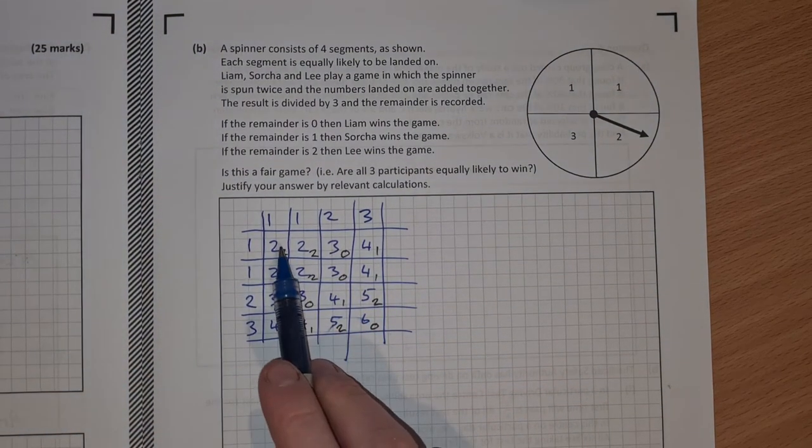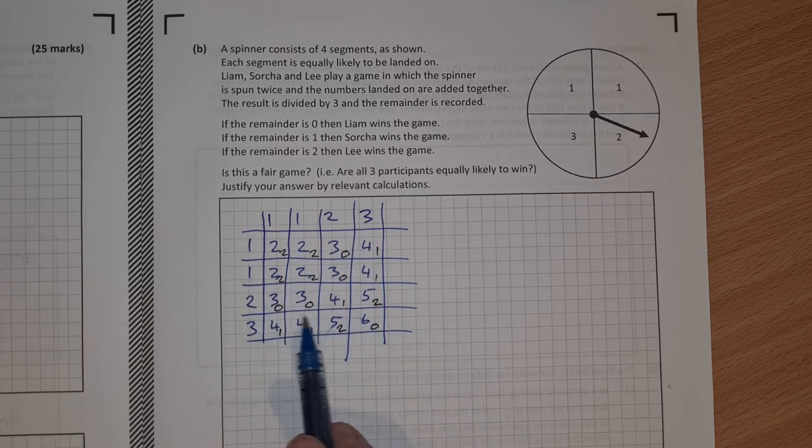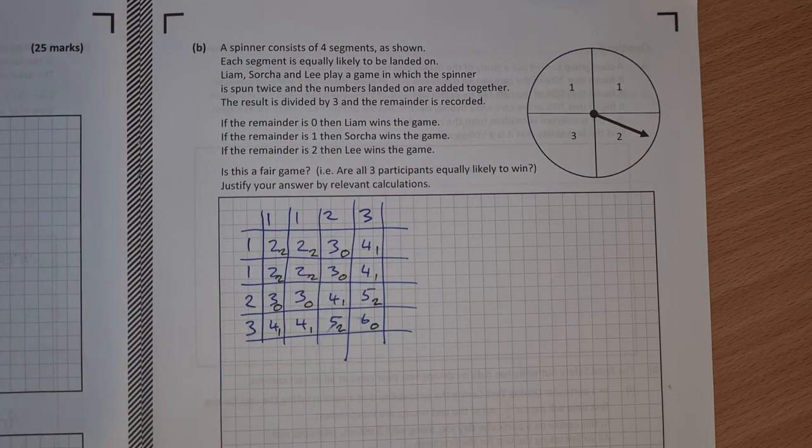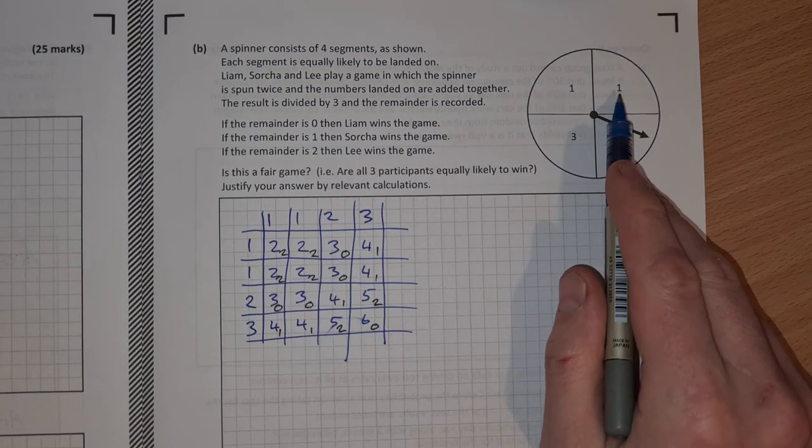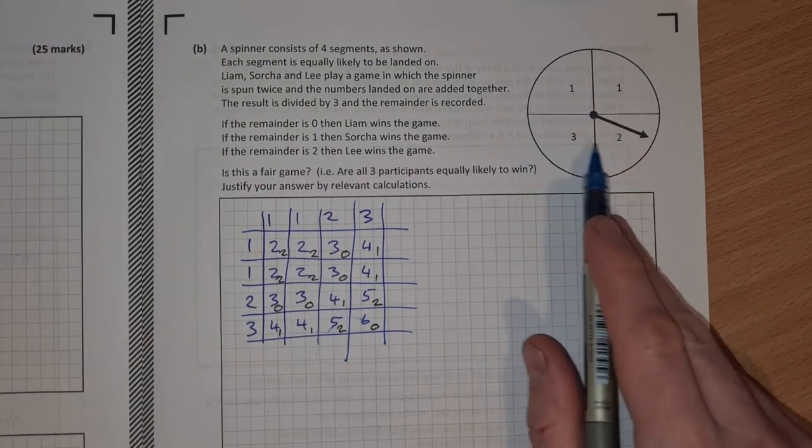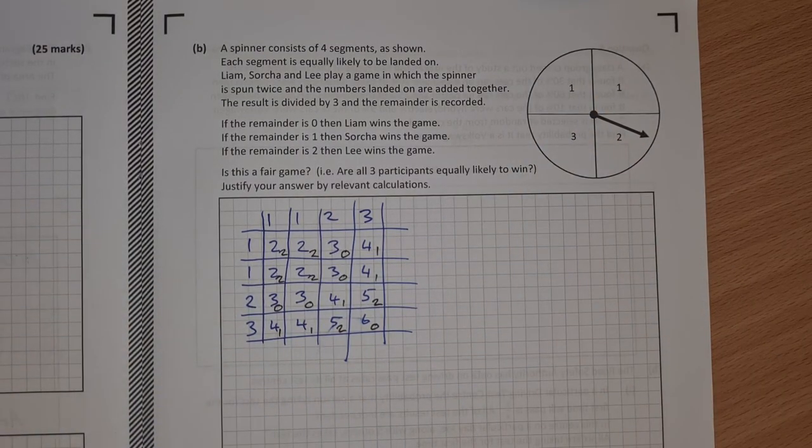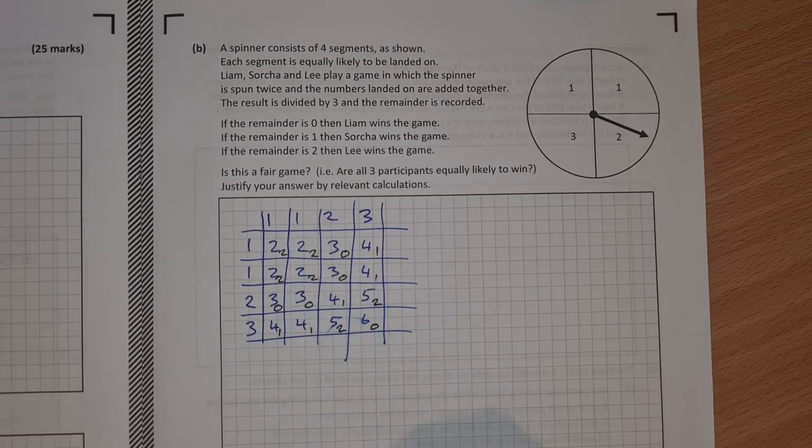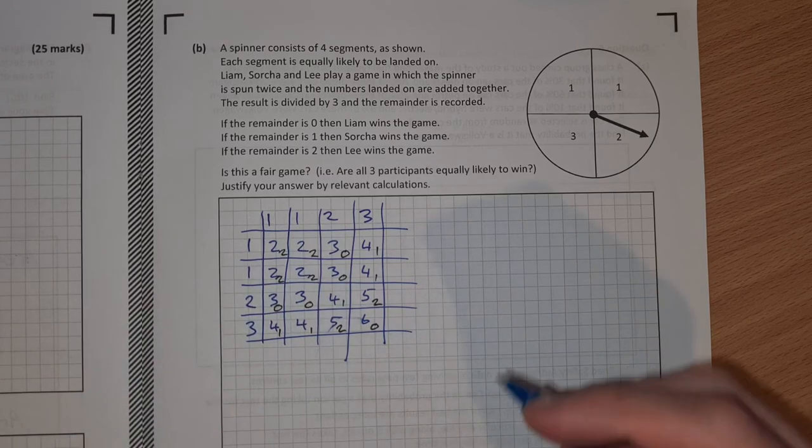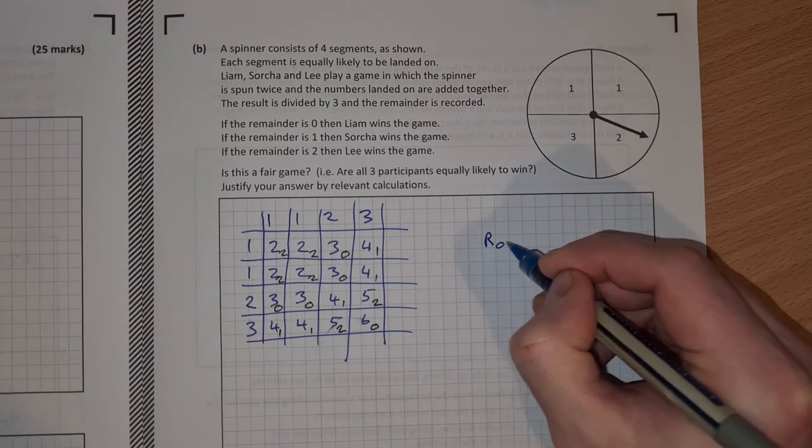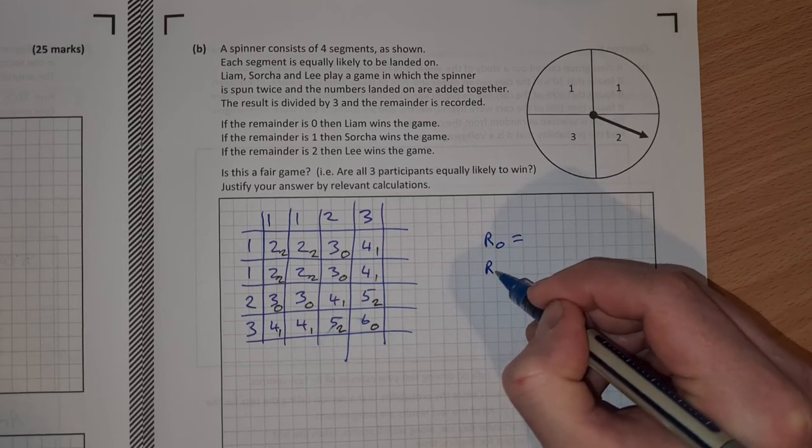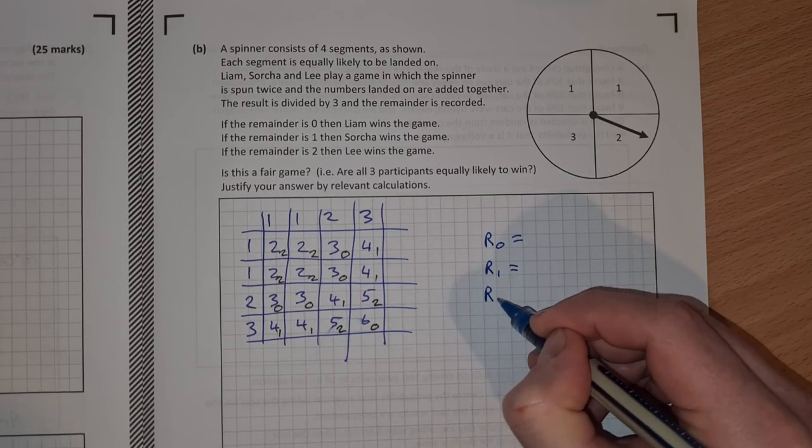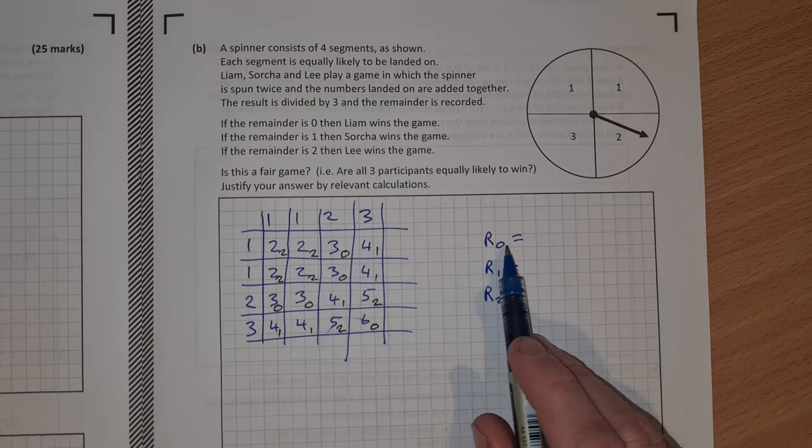So each of these boxes in here, the 16 boxes are equally likely to happen because the spinner, each section on the spinner is equally likely to be landed on. So each of these individual remainders is equally likely to happen. So all I need to do is add together how many remainders of each there are. So remainder 0, remainder 1 and remainder 2.